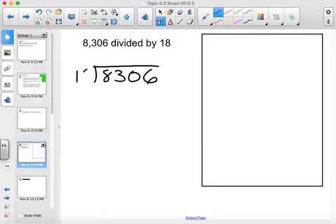And we have to ask ourselves, how many times will 18 go into 83? It will go in four times. Four times 18 is 72. Subtract and you get 11 as a partial product. That's lower than 18. Bring down your zero. You now have 18 and 110. It will go six times.